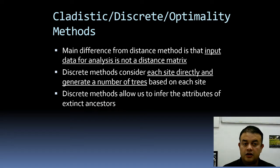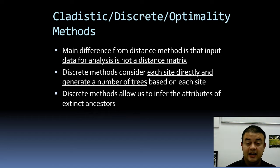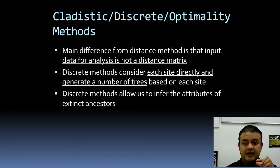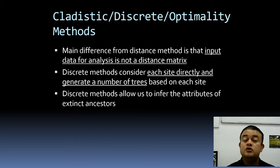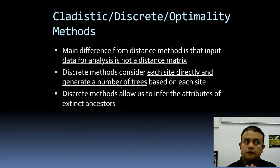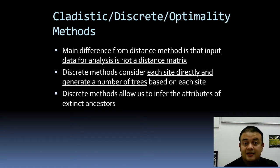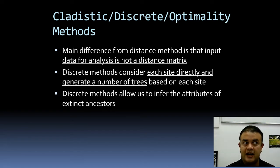The main difference is that the input for data analysis is not a distance matrix — there is no such intermediate in any step of the cladistic methods. Discrete methods consider each site directly and generate a number of trees based on each site. Discrete methods also allow us to infer the attributes of extinct ancestors — the interior nodes are hypothetical extinct species. You can even say that this extinct species, which doesn't exist today, had a gene sequence like this.